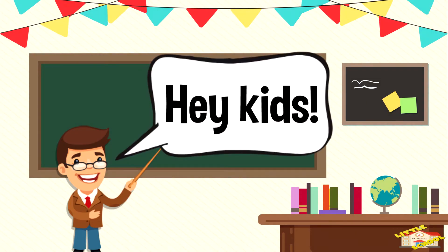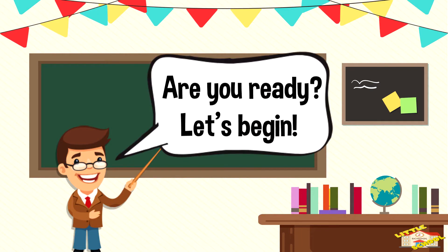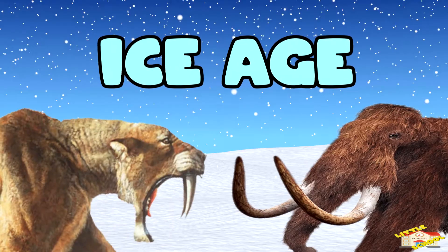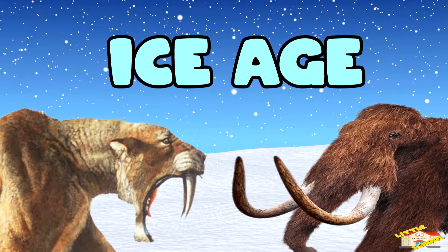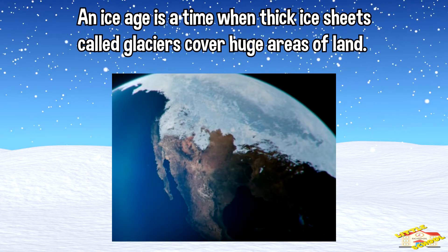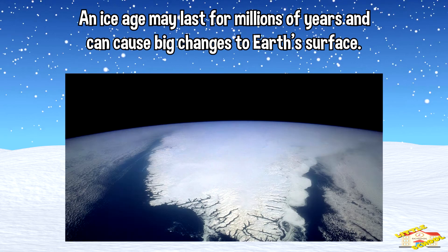Hey kids! In today's video we'll be learning about the ice age. Are you ready? Let's begin. An ice age is a time when thick ice sheets called glaciers cover huge areas of land. An ice age may last for millions of years and can cause big changes to Earth's surface.